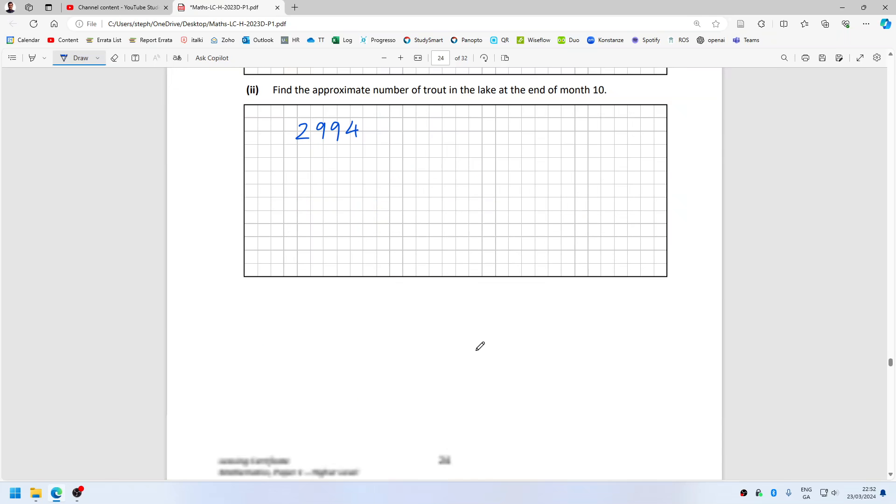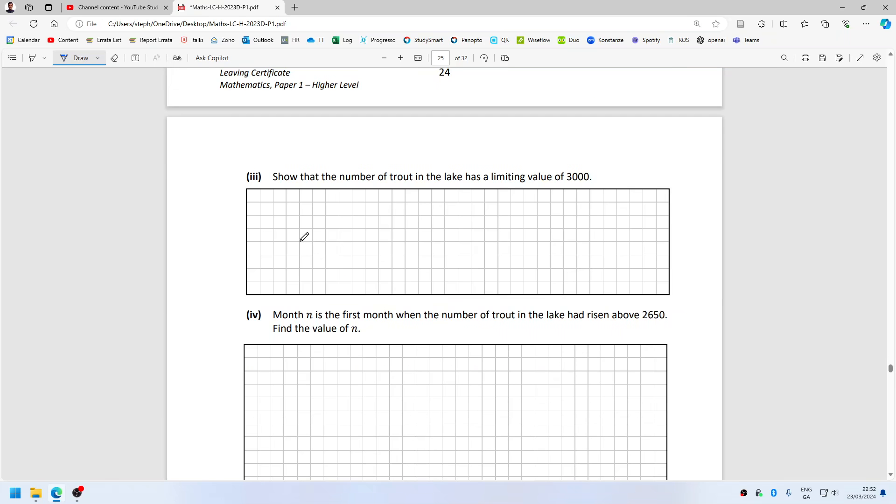Basically, you just want to show that N(t) is less than 3000. I mean, this isn't really enough space to do it formally, so I'm wondering if they just want you to take...